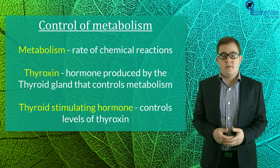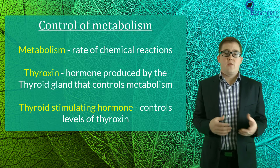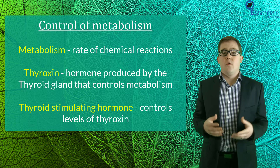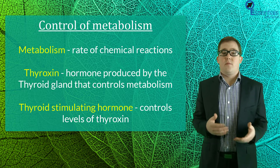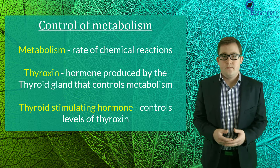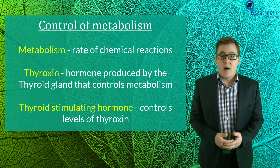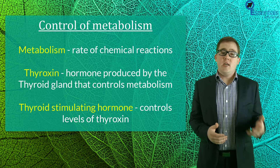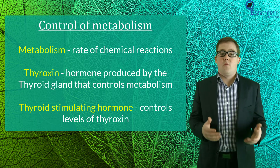Now that we have a general overview of hormones, let's take a look at some specific examples of their use, starting with how they control metabolism rates. Metabolism refers to the vast array of biochemical reactions occurring in an organism, and among the most important of these are the cellular respiration reactions which release energy. Thyroxine is a hormone produced by the thyroid gland which is then secreted into the circulatory system and acts on most cells in the body to help regulate metabolism.